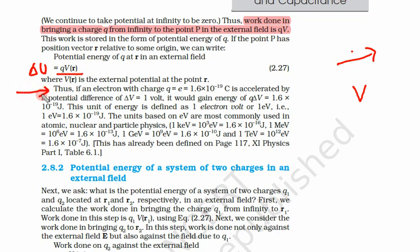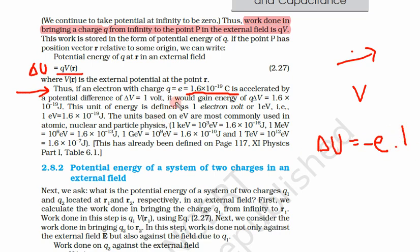Now let us see the definition of electron volt. If an electron with charge q equal to e equal to 1.6 × 10⁻¹⁹ coulomb is accelerated by a potential ΔV equal to 1 volt, let q be an electron so charge is minus e. It would gain energy qΔV, which equals 1.6 × 10⁻¹⁹ joule, because the voltage difference is 1 volt. This unit of energy is defined as 1 electron volt.